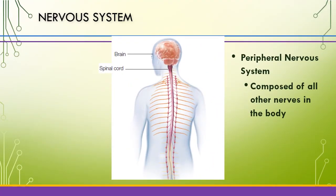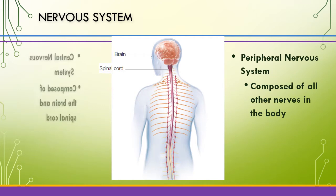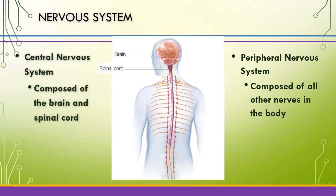The nervous system can be divided into two basic parts. The central nervous system, or CNS, is the brain and the spinal cord — since it's the very center. The rest of the nerves throughout the body are known as peripheral. Think in terms of driving: your peripheral, or side, vision — that'll help you remember that peripheral refers to all the other nerves in the body.